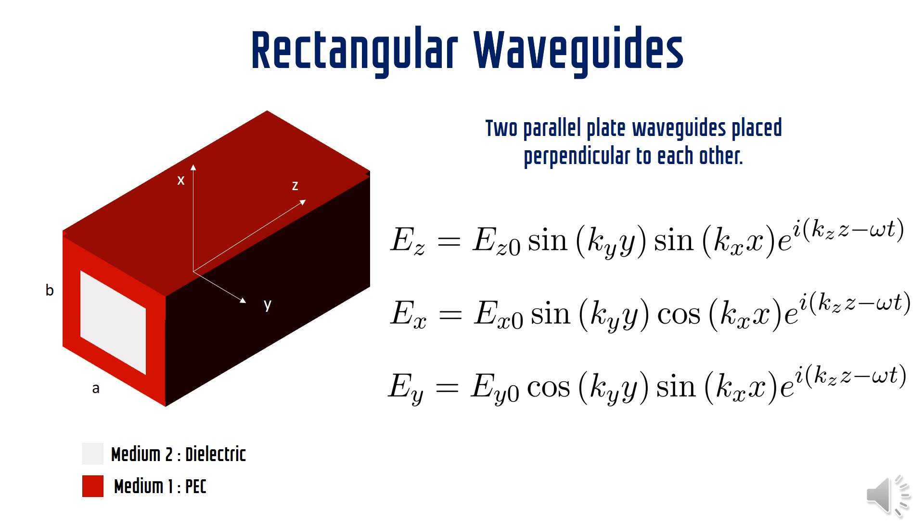The expressions for the components of electric field inside the rectangular waveguide are as given here. We would like you all to verify these expressions and also derive the expressions for magnetic field and cutoff frequency on your own. If you have any problem in this exercise, please comment your problem below.